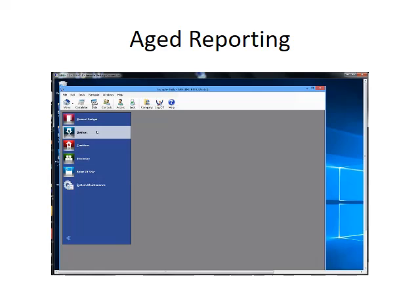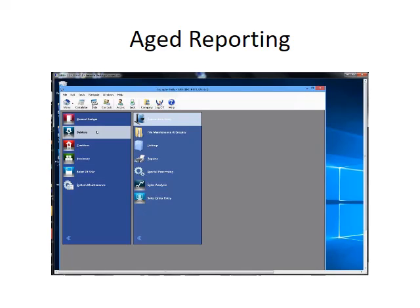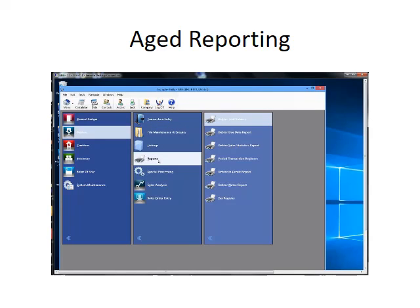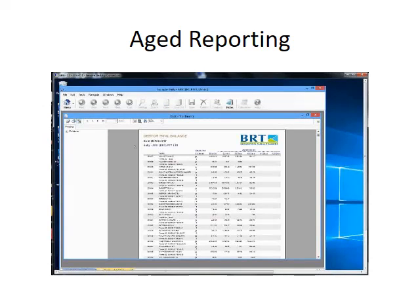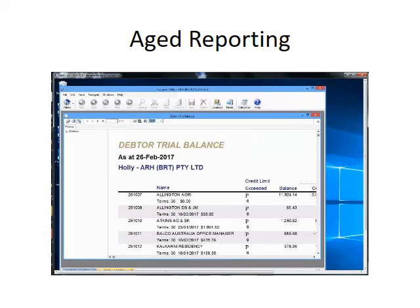One of the other things to always be careful of at month end is looking at our debtors - how much are we owed and who are our potential bad debtors. Normally we want people to look in under debtors reports, trial balance. Traditionally you'd ask your bookkeeper to do this and give you the figures, but it's important that you run them and have a look. The normal reports coming through here are looking at all periods and including things like credit limit.